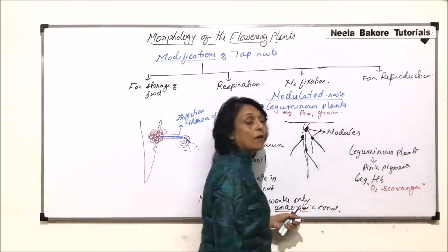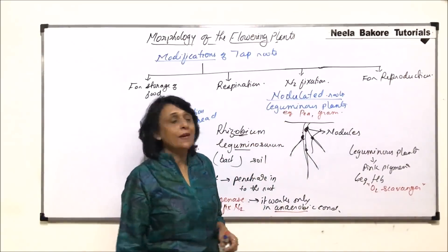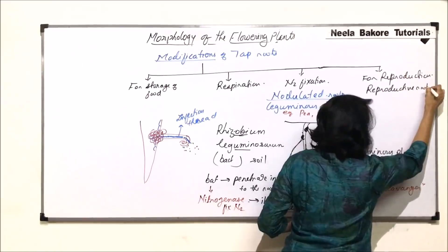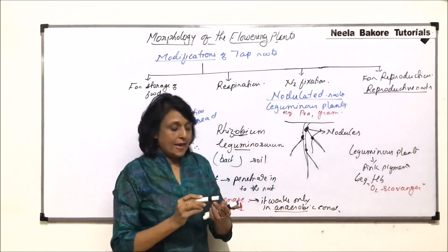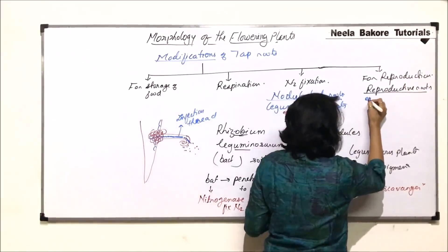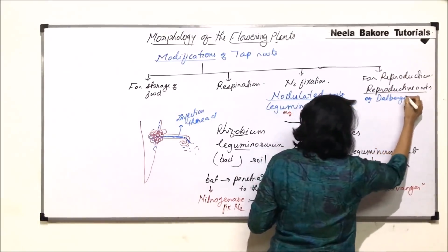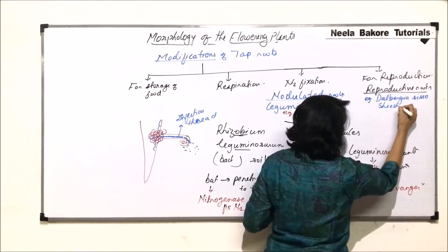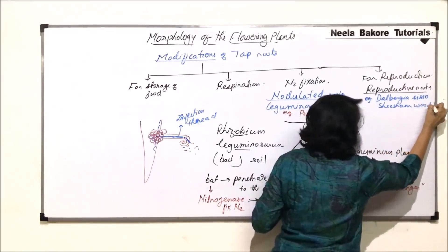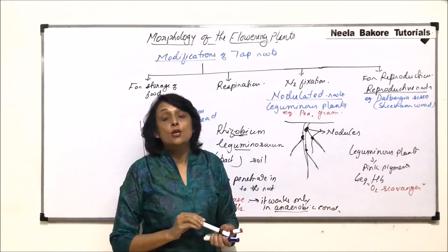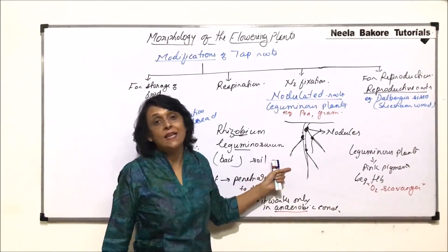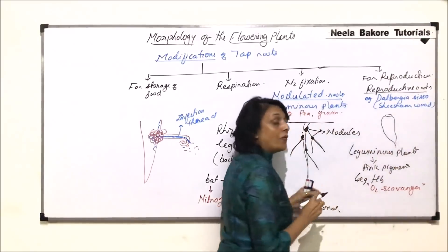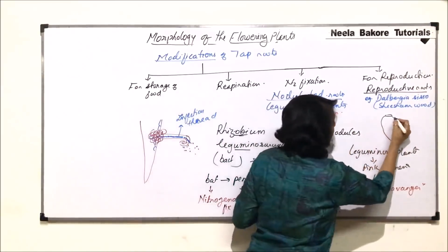Now coming to the last modification, where tap roots are going to help in reproduction. Such roots would be called reproductive roots, named after the function which they perform. An example of this is Dalbergia sissoo, commonly known as shisham wood. It is a very good quality wood which is used for furniture making. The roots of this particular plant help in reproduction. The roots are normally irregular and on the roots are present buds.